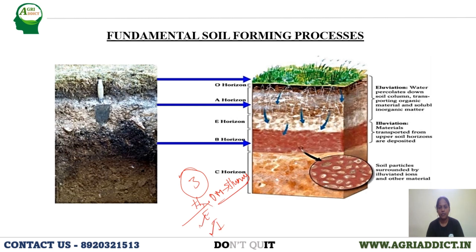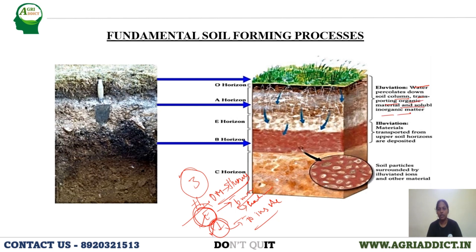Next is eluviation and illuviation. Eluviation means materials moving outward or downward. What happens in eluviation is that water percolates down the soil column, transporting organic material and soluble inorganic matter along with the water. So the water along with these materials gets percolated from upper horizons to lower horizons — this process is called eluviation.